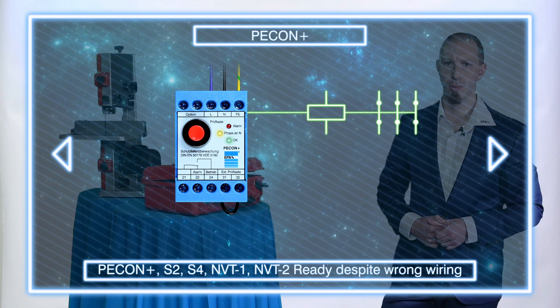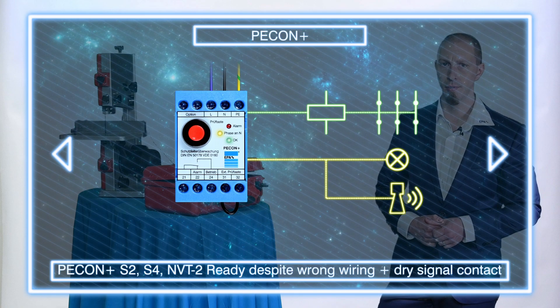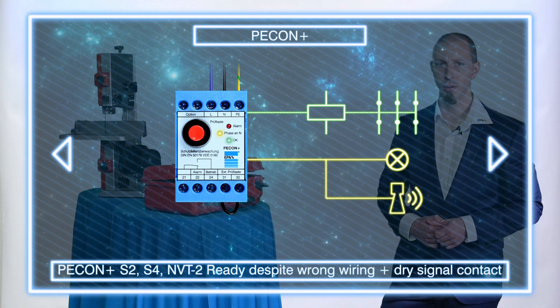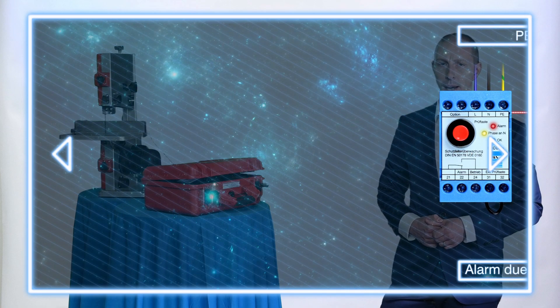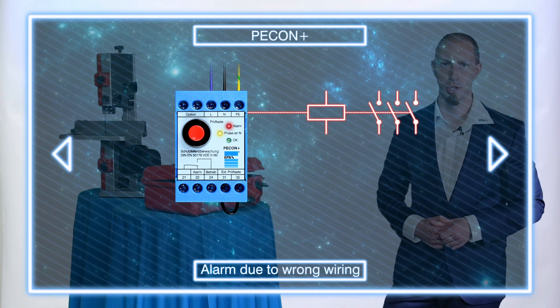The S2, S4, and NVT2 models also actuate an additional dry contact to signal the polarity reversal. All other models interpret polarity reversal as a fault and therefore do not show operational readiness.